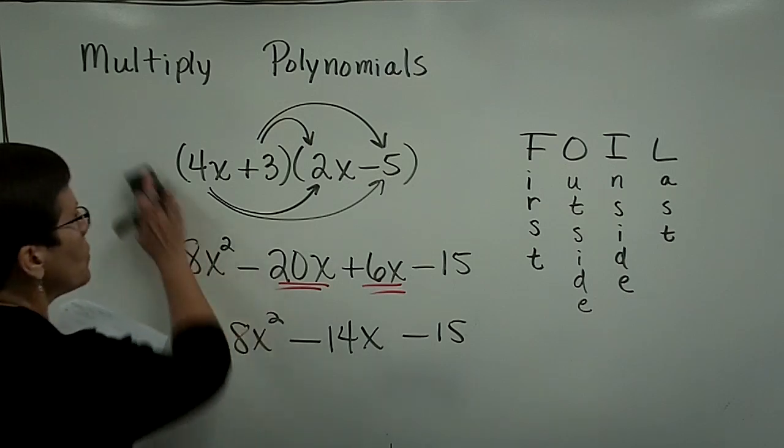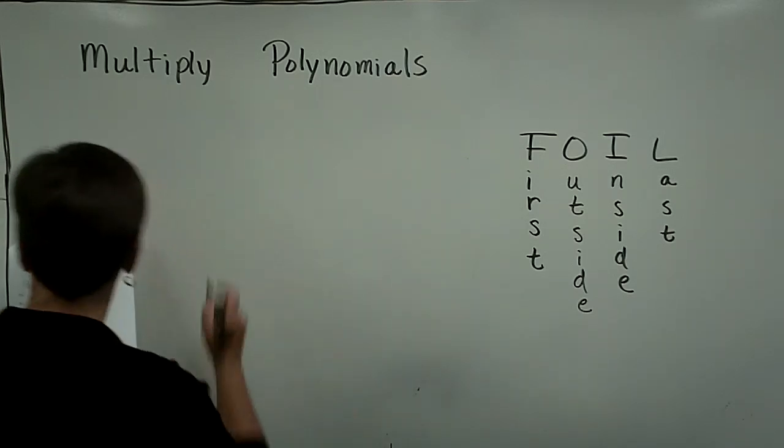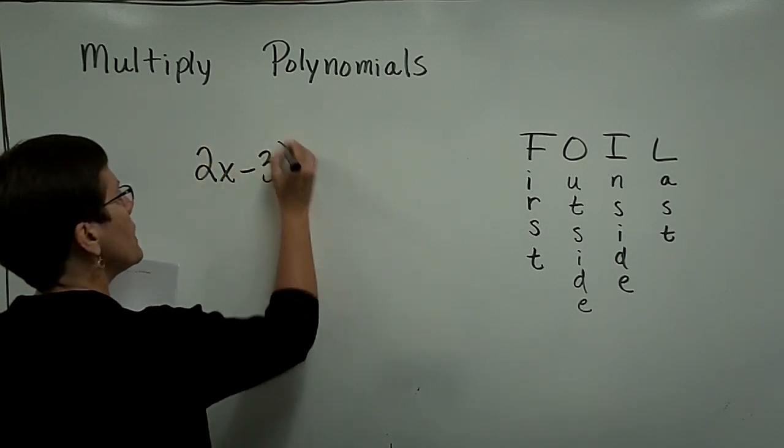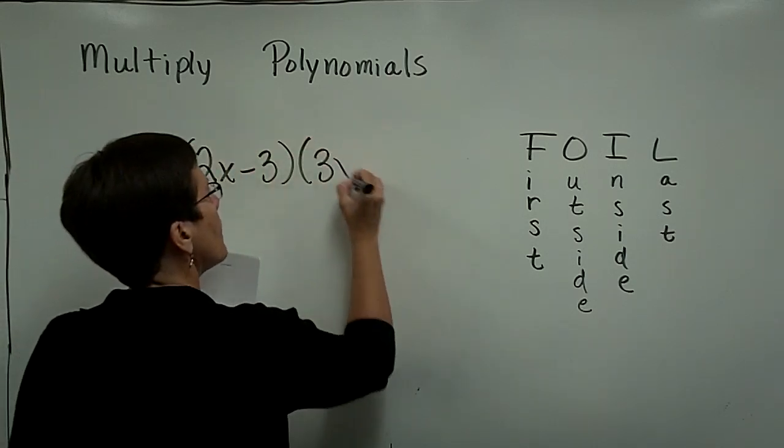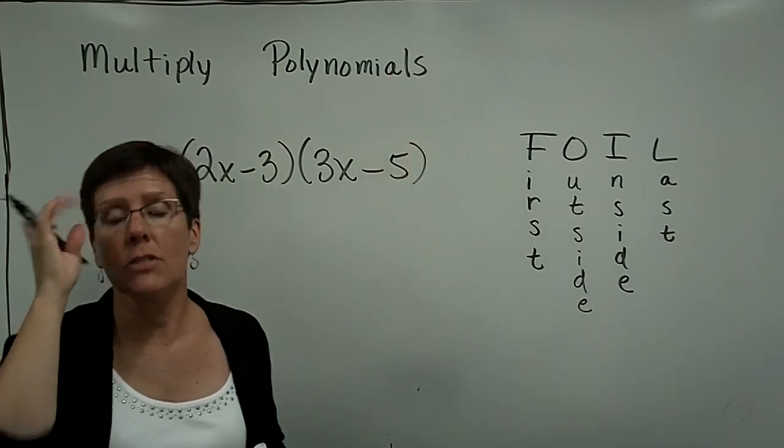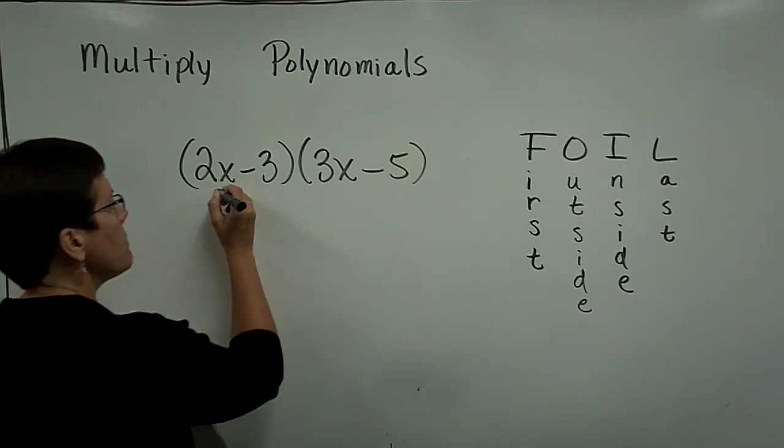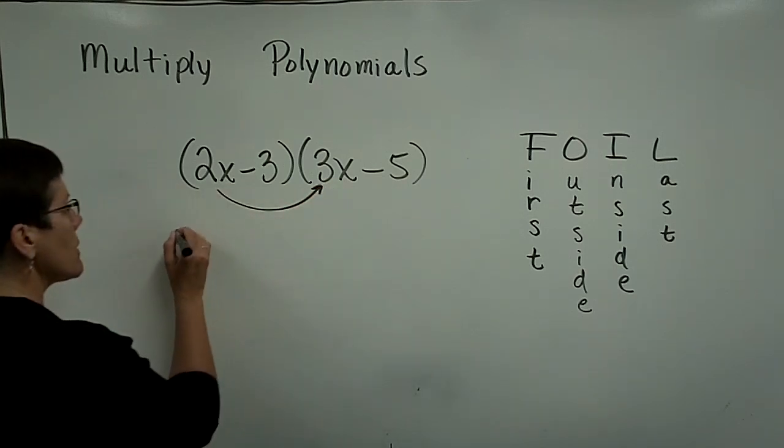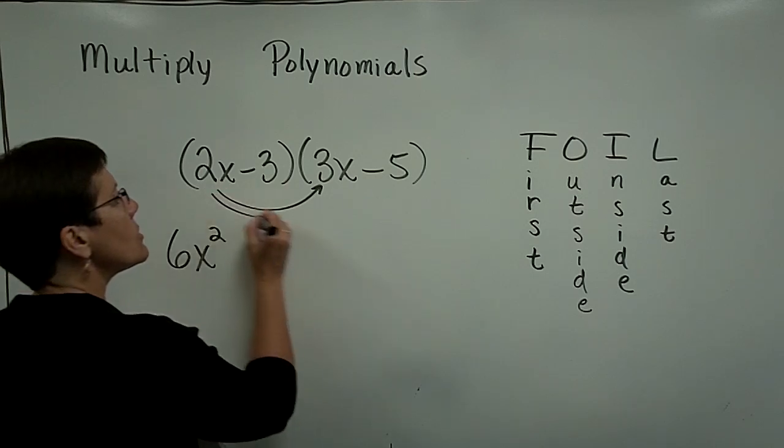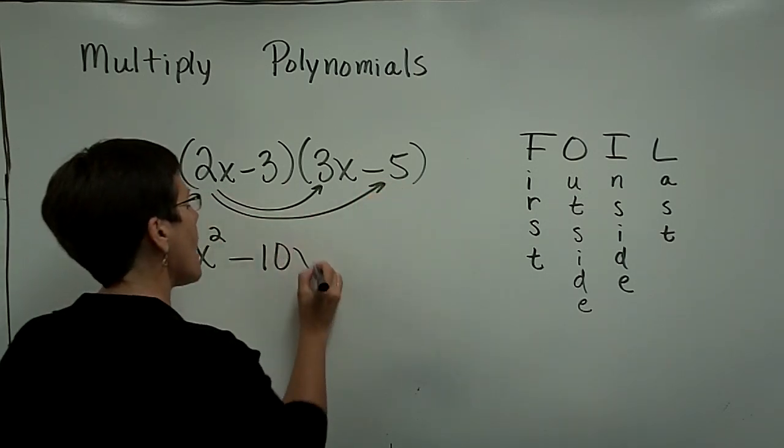Let's see. Let's go ahead and do one more like that. And then let's do two special circumstances. So let's take 2x minus 3 times 3x minus 5. I'm just trying to change this up a little bit in terms of signs. So these two binomials both have minus signs in between. So 2x times 3x is 6x squared.